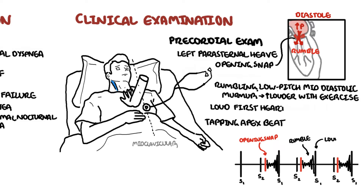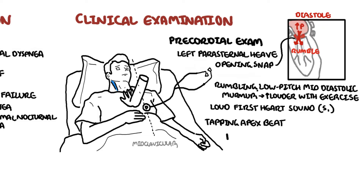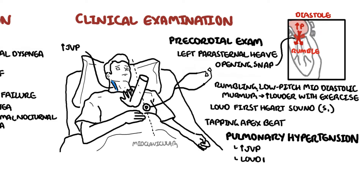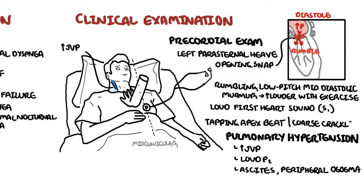There is also a loud first heart sound, which is the closing of the atrioventricular valve. Signs of pulmonary hypertension include a loud P2 over the pulmonary valve. Right-sided heart failure presents with distended neck veins, increased jugular venous pressure, ascites, and peripheral edema. Left-sided heart failure signs may include coarse crackles. Malar flush is caused by a reduced cardiac output state with associated vasodilation in the face.